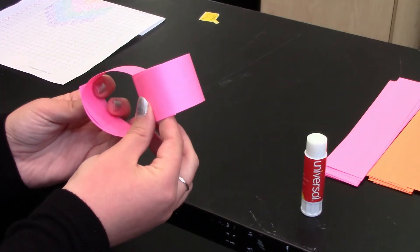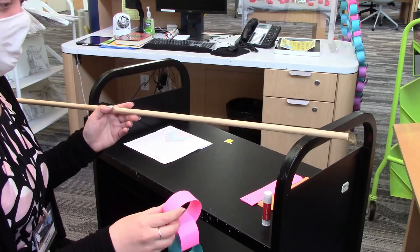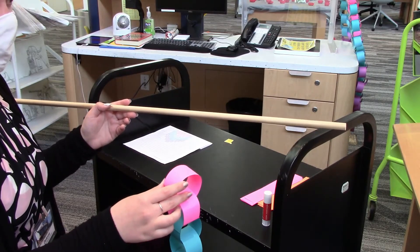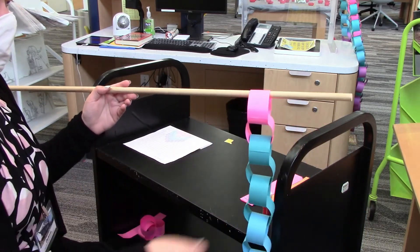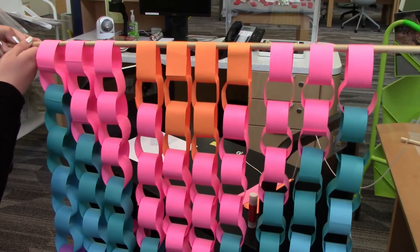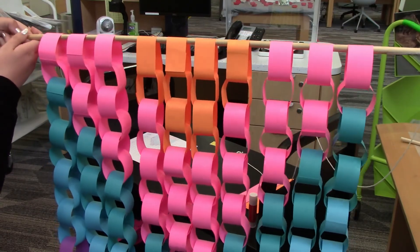This will form the base of your tapestry. Once you've completed your chain of paper, place it onto the end of the wooden stick. Continue placing the columns of paper along until you've completed your tapestry.